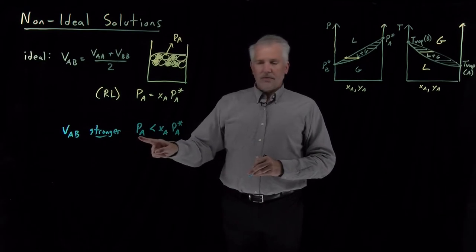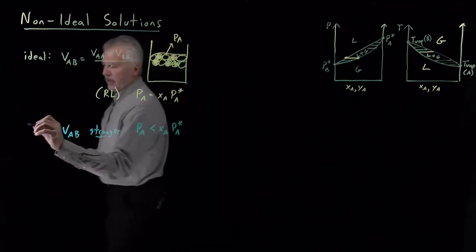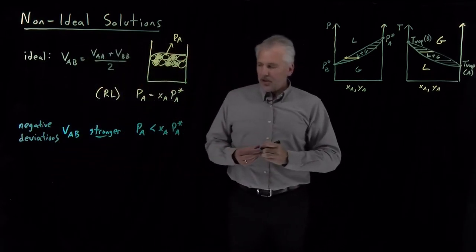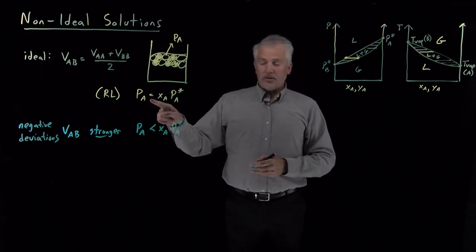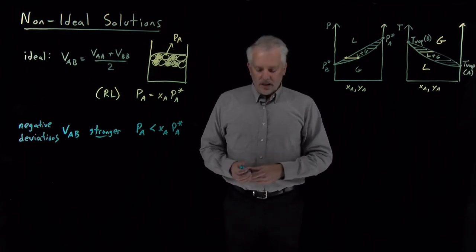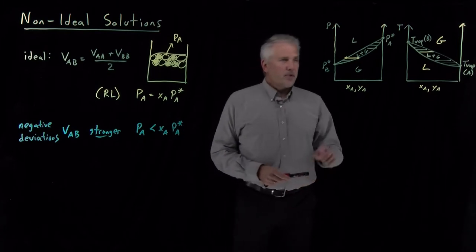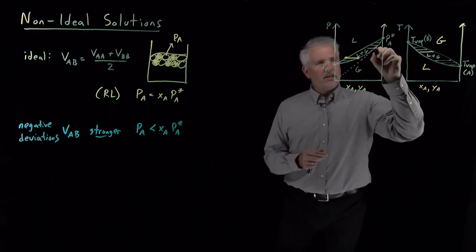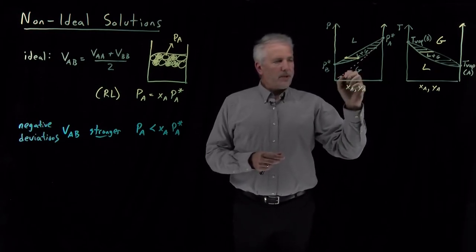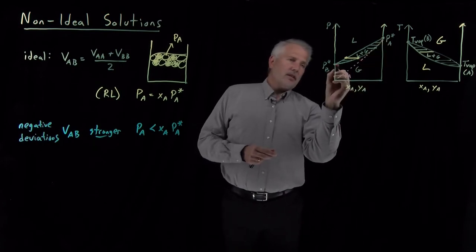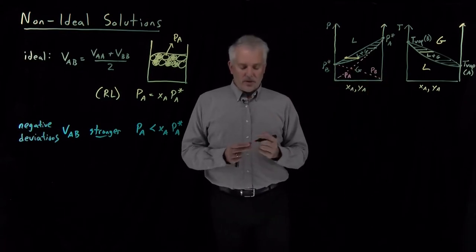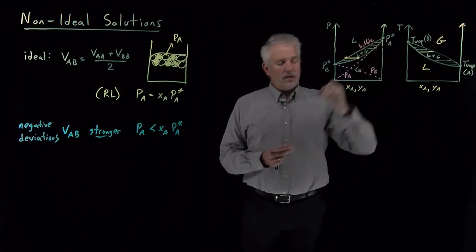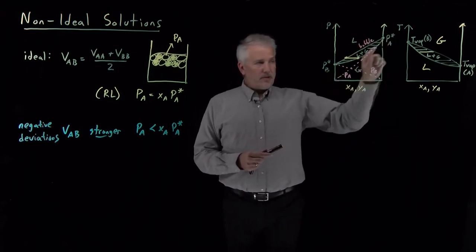Strong heterogeneous interactions mean fewer molecules escape. We call that situation negative deviations, because the pressure is lower than the Raoult's law prediction. Moving to the pressure-composition diagram: Raoult's law for component A says partial pressure P_A increases linearly with concentration of A, and partial pressure P_B increases linearly with concentration of B. Adding those two curves gives the bubble point curve, which is a straight line if the system obeys Raoult's law.